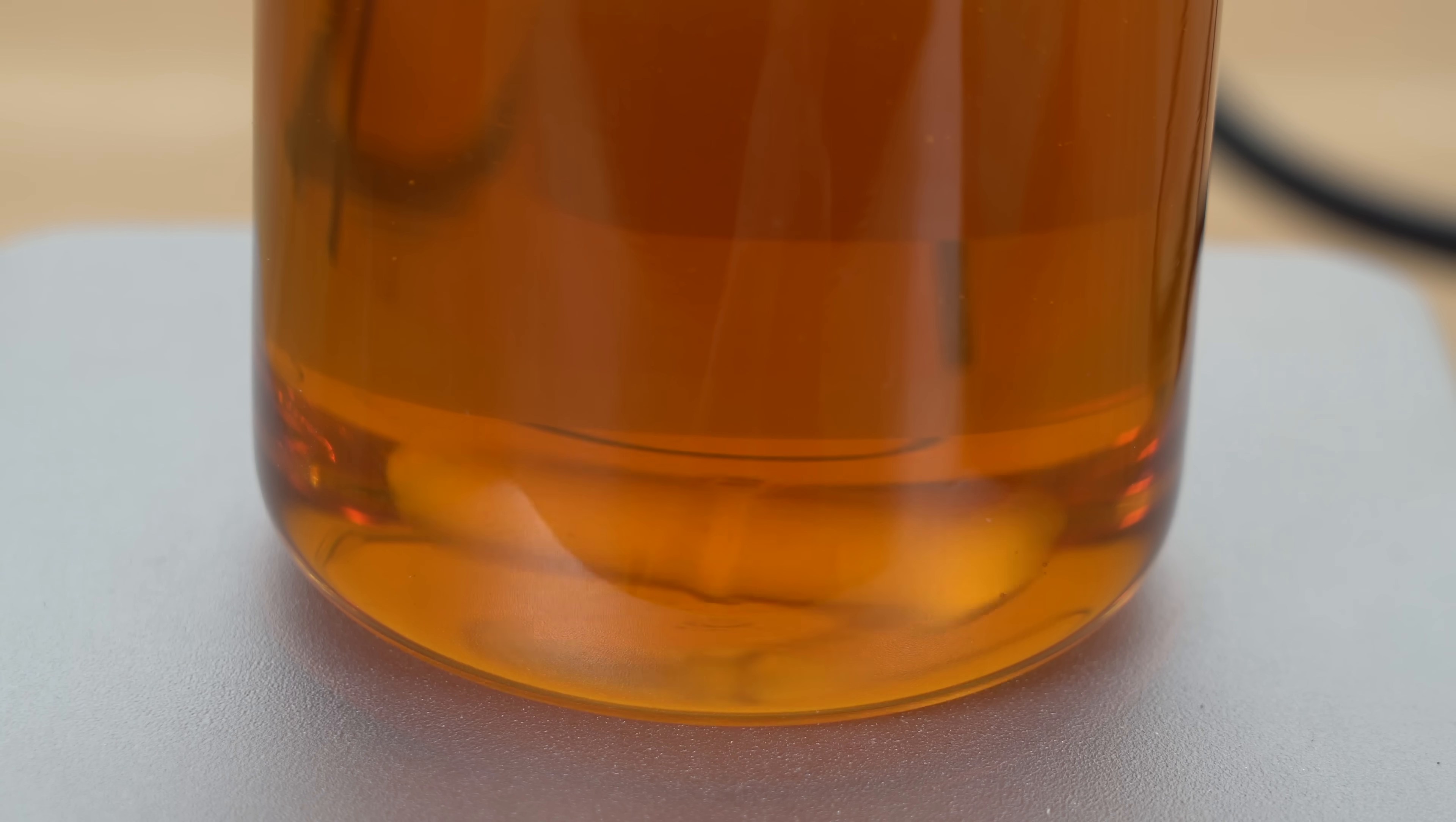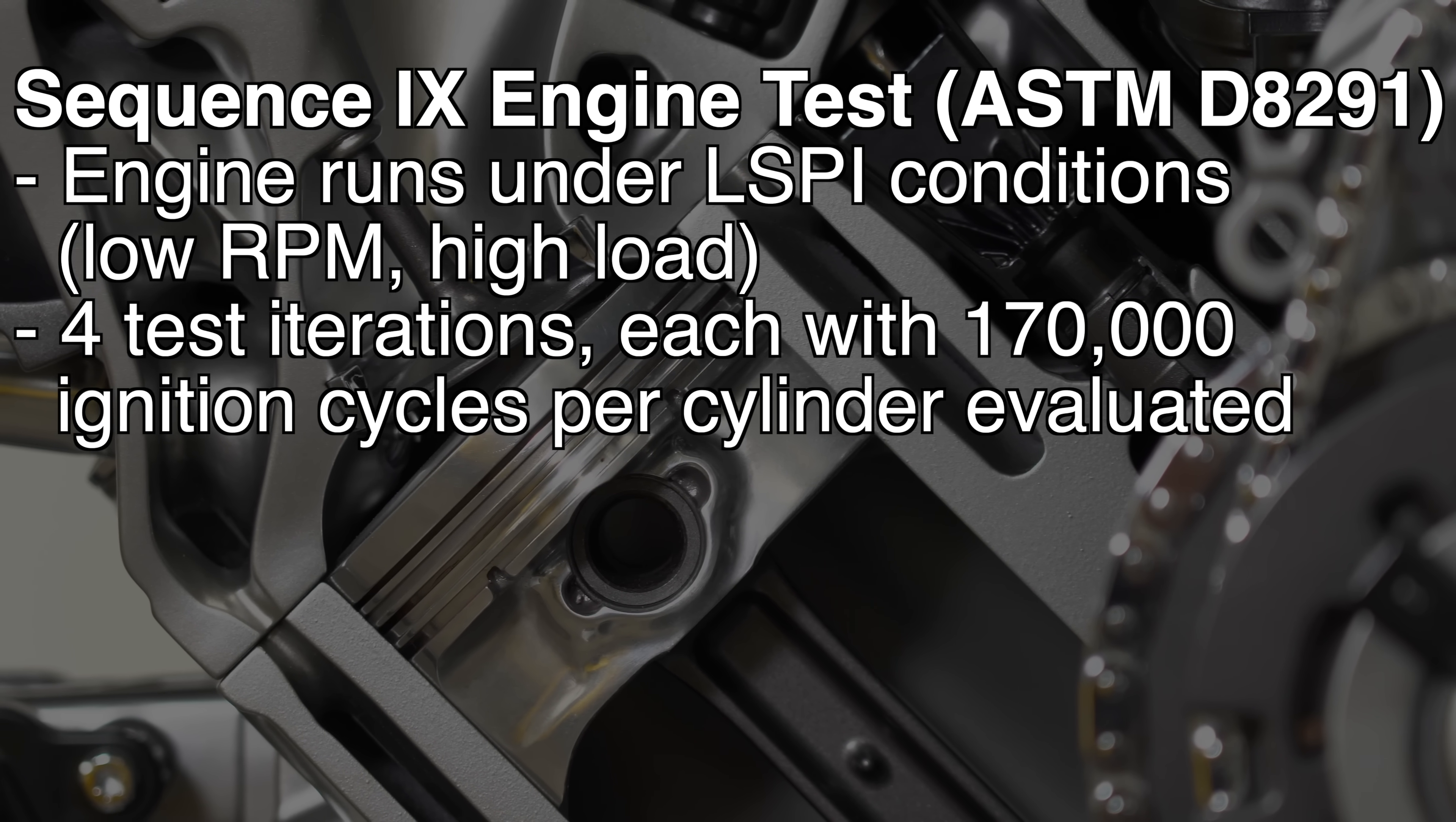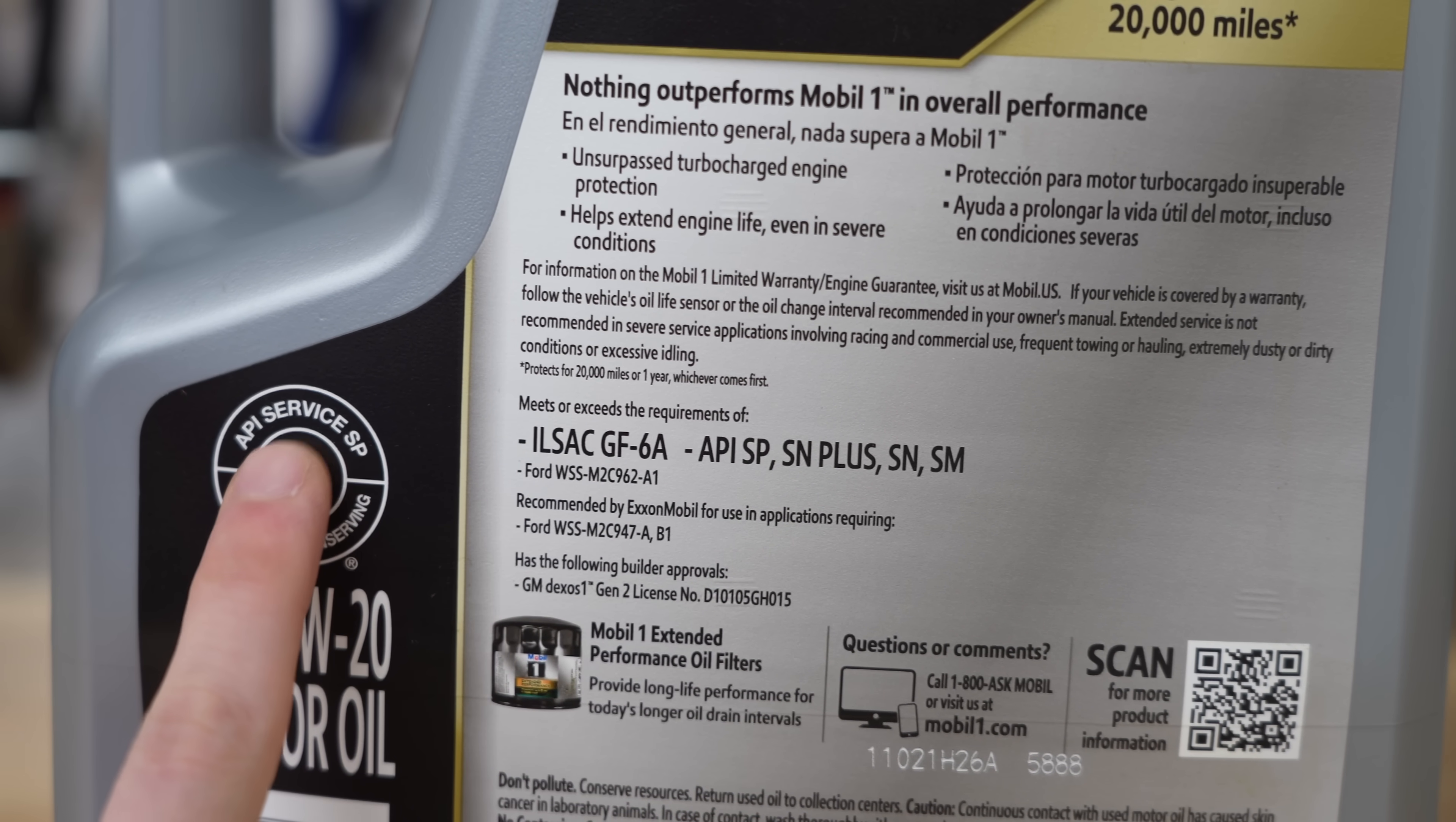So how do we ensure an oil doesn't cause excessive LSPI? Well, again, there's an industry standard test, the sequence nine engine test. Here we have an engine operate at a low speed with a high load where LSPI occurs, and we run the engine through four repeated tests, which add up to hundreds of thousands of ignition cycles per cylinder. For each of these four tests, the number of pre-ignition events is measured, and there is a maximum that cannot be exceeded in order to pass. So how do you know if the oil you're using passed this test? Again, look for the certification. Anything with API SP or ILSAC GF6 will have passed. So using an oil with the latest certification is a good idea in general, but this is especially true if you're using a modern direct injection turbocharged engine.